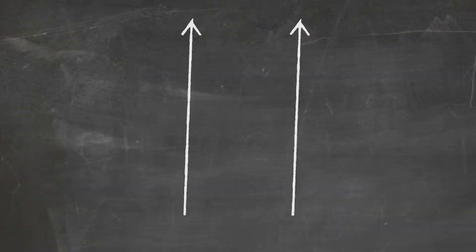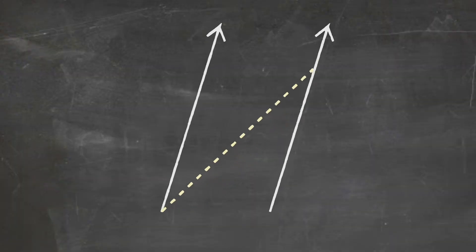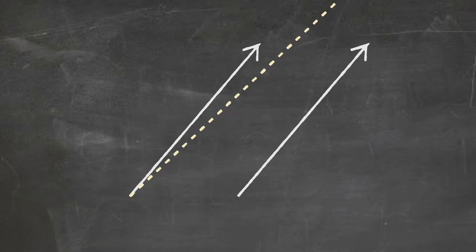Now set the other light clock in motion. Notice that to get from one side to the other, the light beam has to travel a lot farther, so it takes more time for this clock to tick from the perspective of the Earth reference frame. The faster the clock is going, the longer it takes to tick.